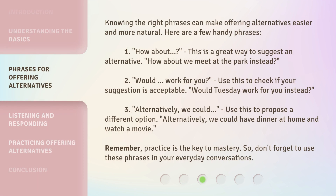Knowing the right phrases can make offering alternatives easier and more natural. Here are a few handy phrases. First, 'How about' — this is a great way to suggest an alternative. For example: 'How about we meet at the park instead?' Second, 'Would that work for you?' — use this to check if your suggestion is acceptable.